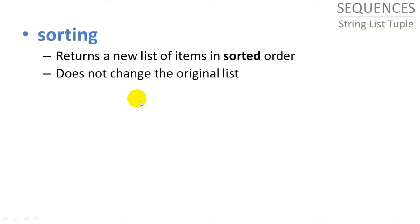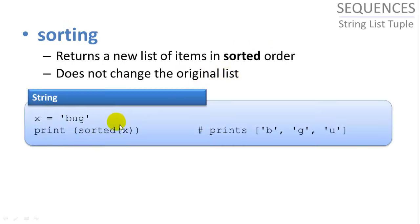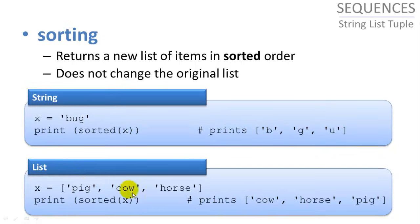We can sort the items of the list. This sorted function actually returns a new list without changing the original list. It returns a new list in sorted order. So bug will return the letters of bug in a list in sorted order, b, g, u. And our list pig, cow, horse, if we call sorted of x, it's going to return cow, horse, pig. And mind you, the original x is still unchanged.